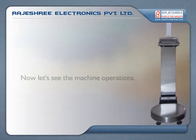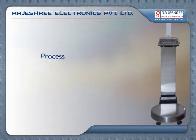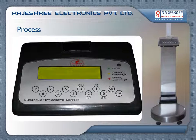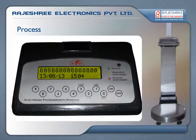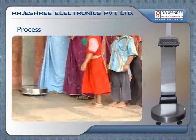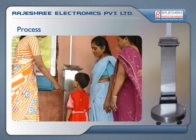Let's see the machine operations. Ensure the battery charger is in place. Start the monitor console by pressing the ON key. The display screen will show a countdown from 9 down to 0. Within 5 to 10 seconds, the monitor will self-calibrate for weight and height and the display will prompt: 'Let baby or adult stand straight on the platform.' The monitor will then automatically record weight and height.